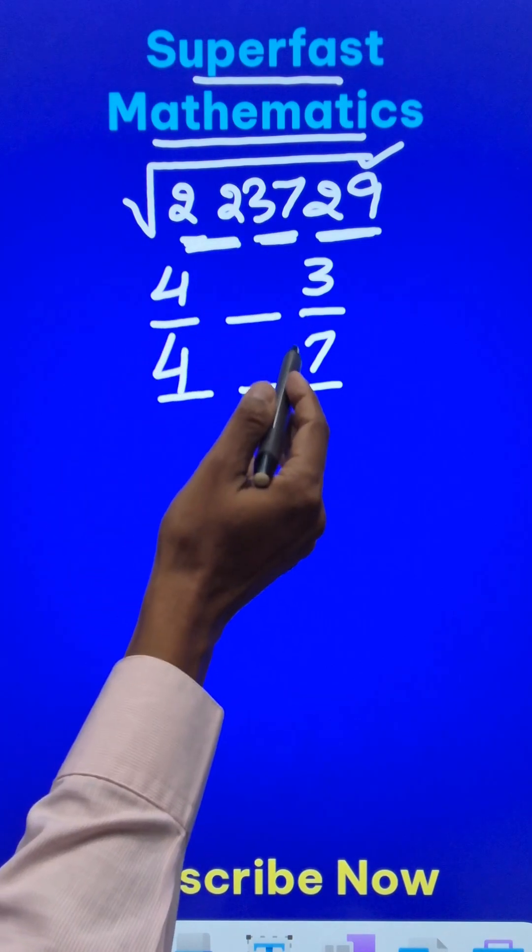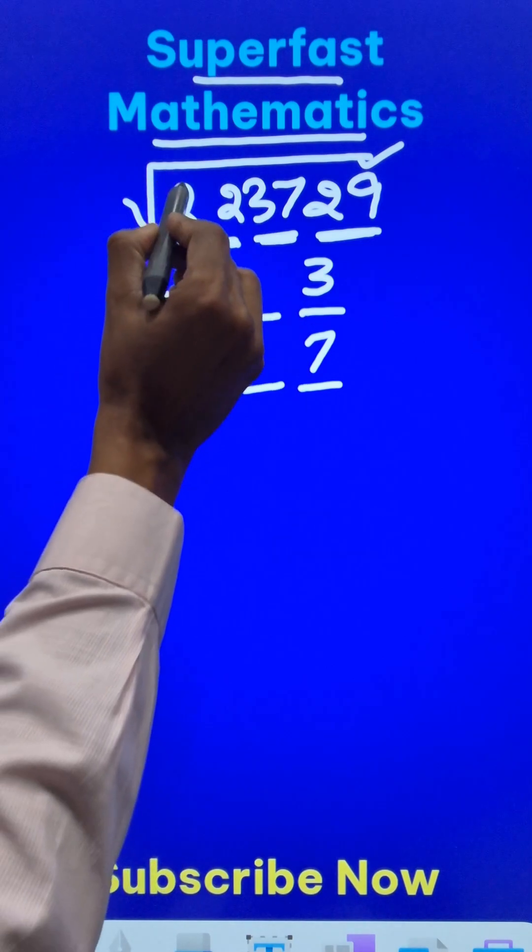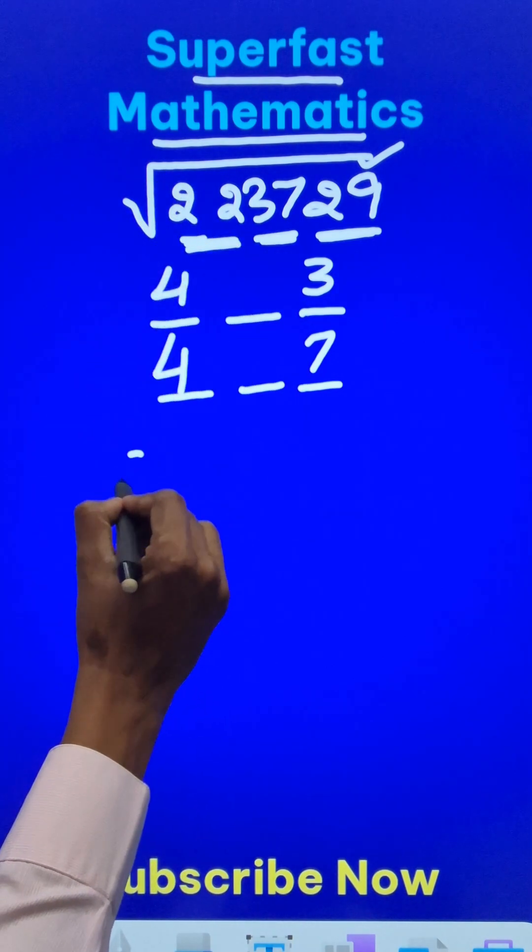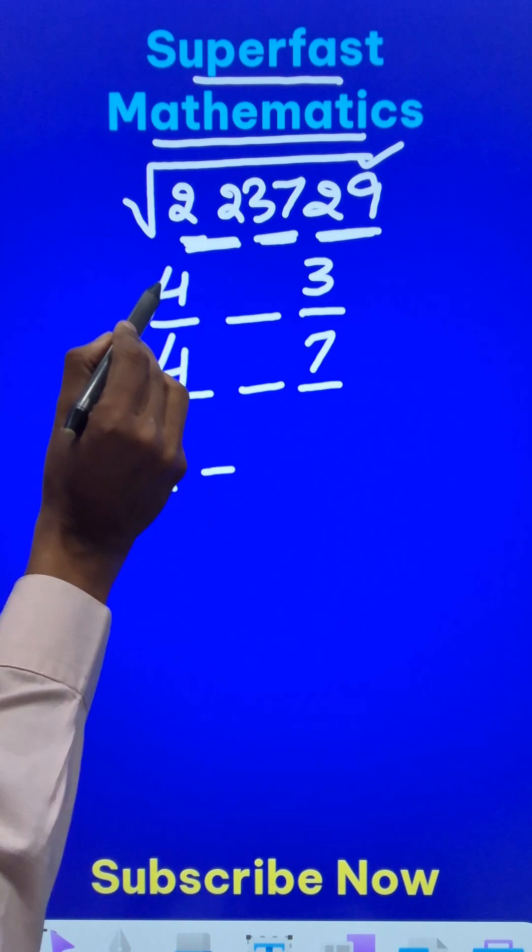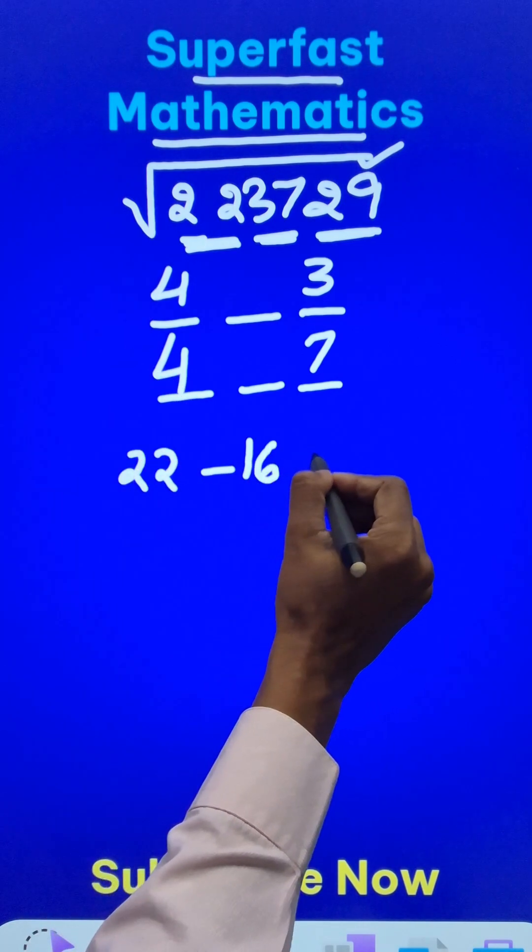Now all I need to worry about is the middle digit. How do I do that? For that, this 22 first pair minus the number which I selected was 4 squared, right? 4 squared is 16, so the difference is 6.